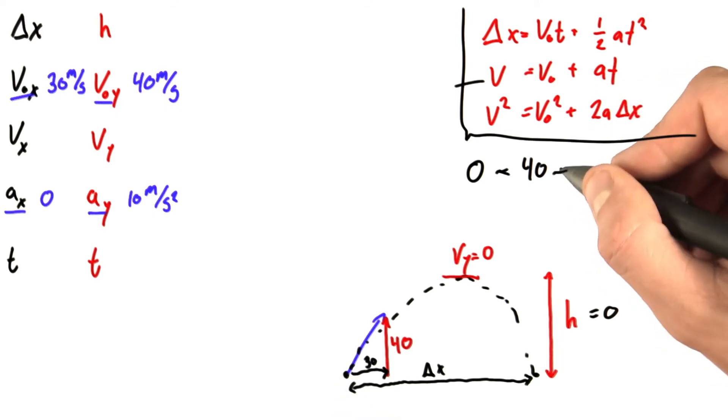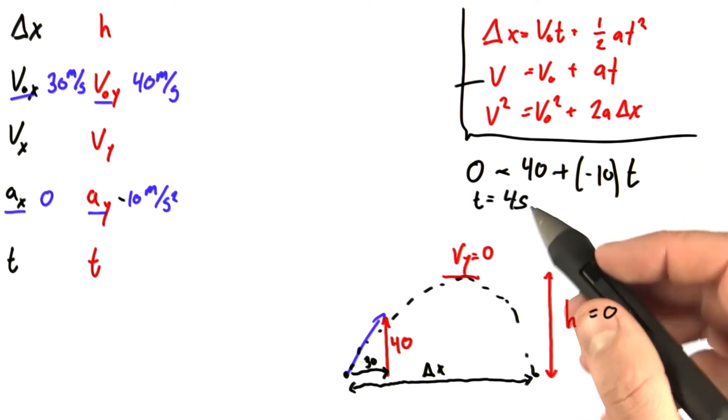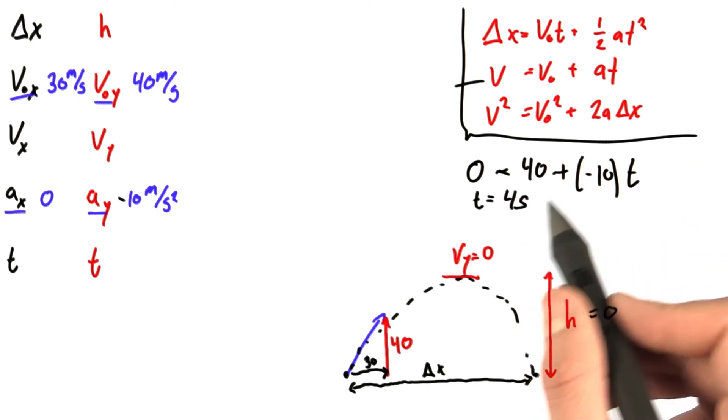Acceleration here is negative 10. Once I choose the initial velocity upwards of 40, acceleration is downwards, has to be negative, times time. If I solve this, I find that the time is equal to 4 seconds.